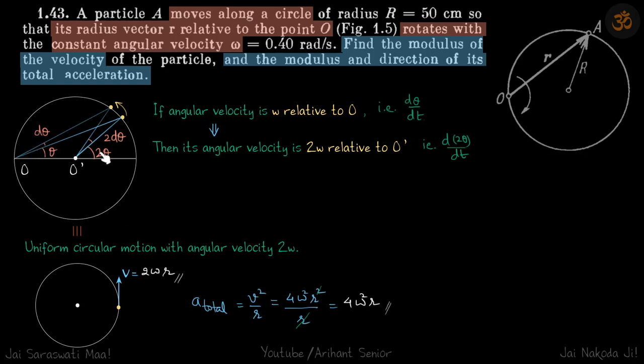From here we can see that d*theta/dt, if that is the angular velocity of this particle with respect to O, then with respect to O' it is simply 2*d*theta/dt, that is 2*omega. So with respect to O if the particle is traveling with omega, then with respect to O' it is traveling with 2*omega.